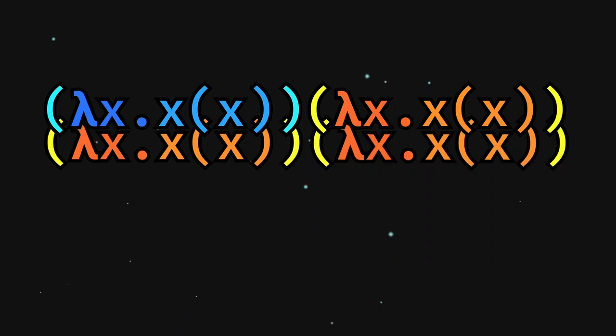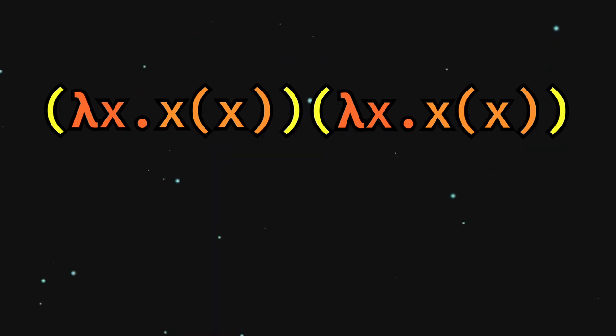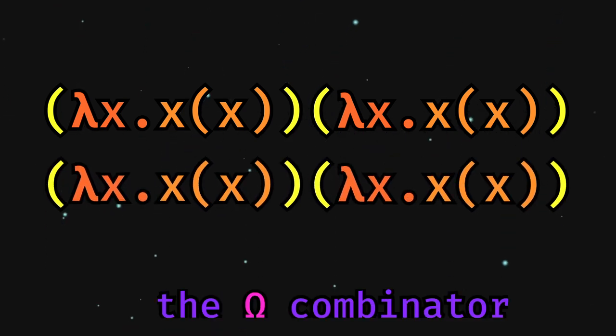At this point, since there is an unresolved function call, an interpreter would continue to evaluate the expression, over and over, without ever stopping. This expression is known as the omega combinator.